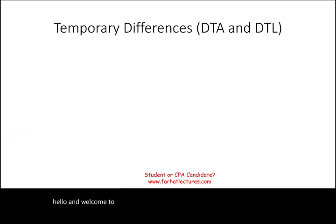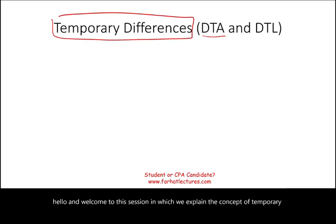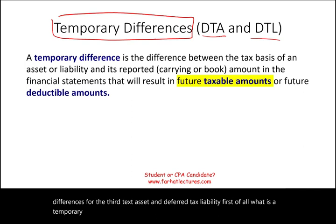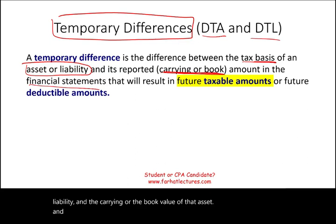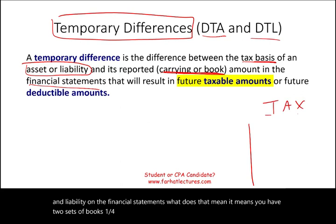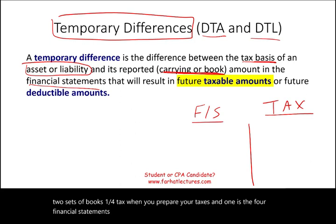Welcome to the session explaining the concept of temporary differences for deferred tax assets and deferred tax liabilities. A temporary difference is the difference between the tax basis of an asset or liability and the carrying value on the financial statements. This means you have two sets of books: one for tax, following IRS rules, and one for financial statements, following GAAP.